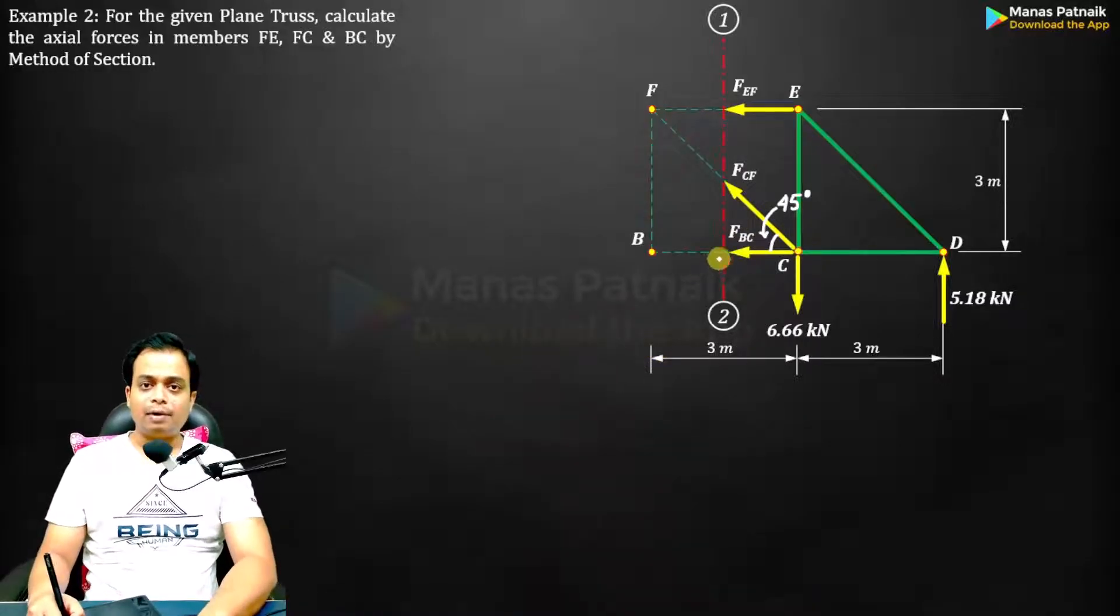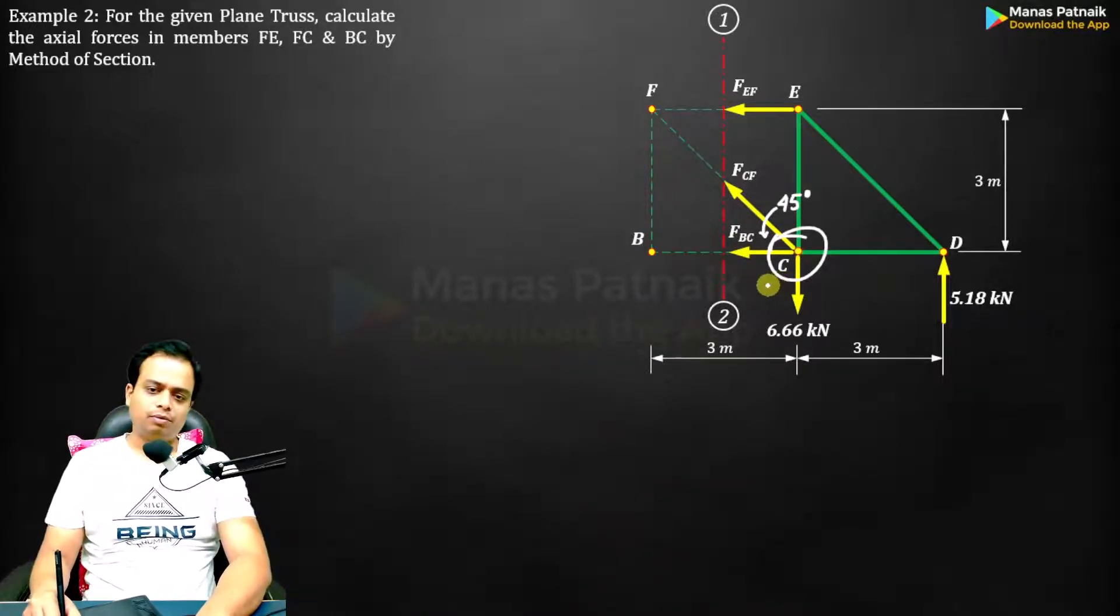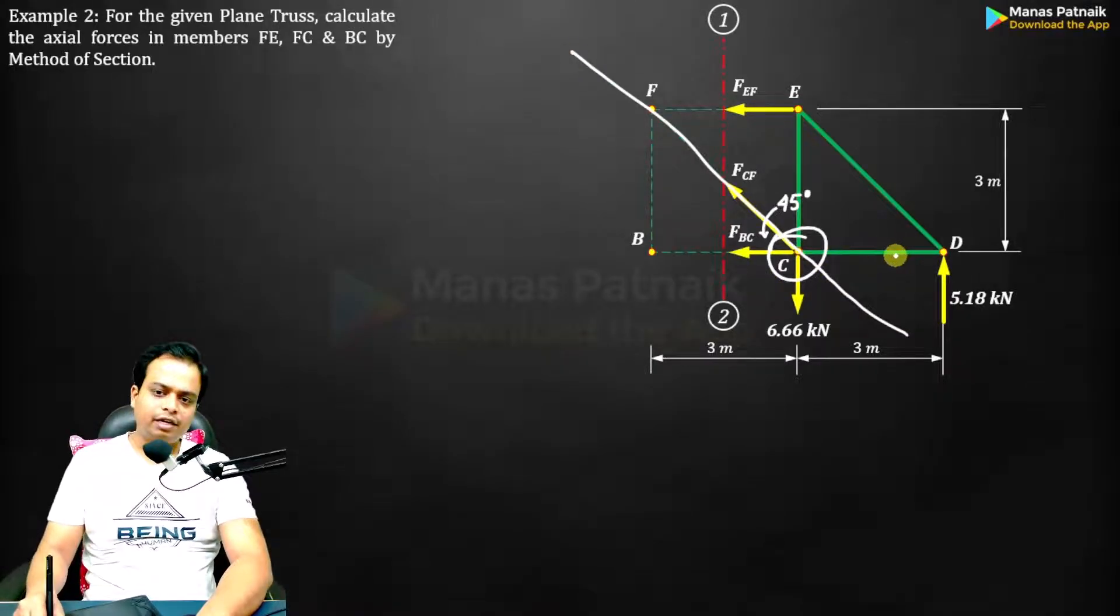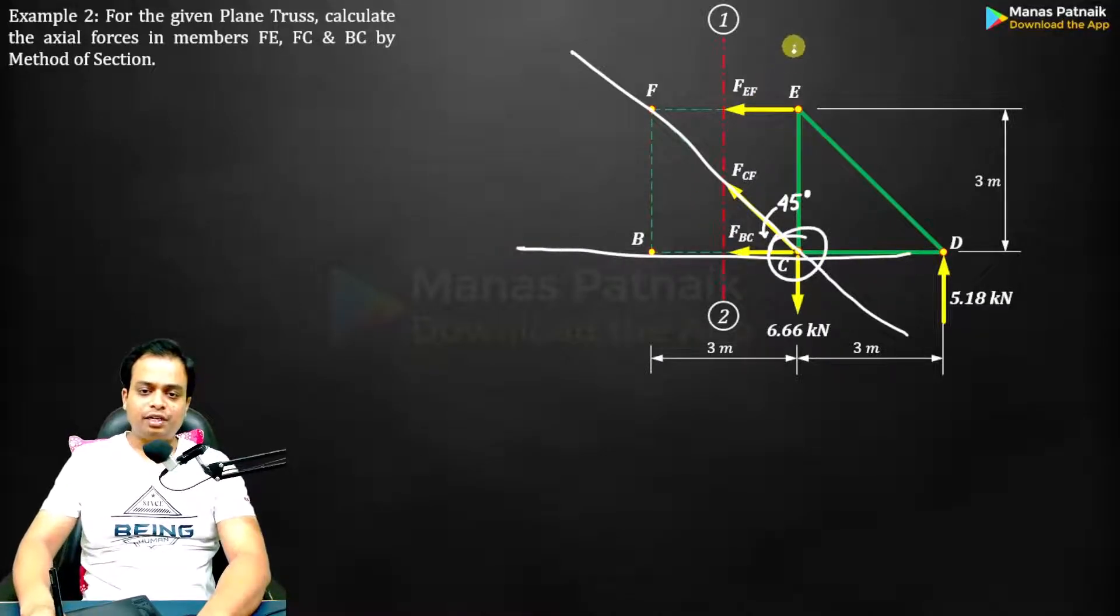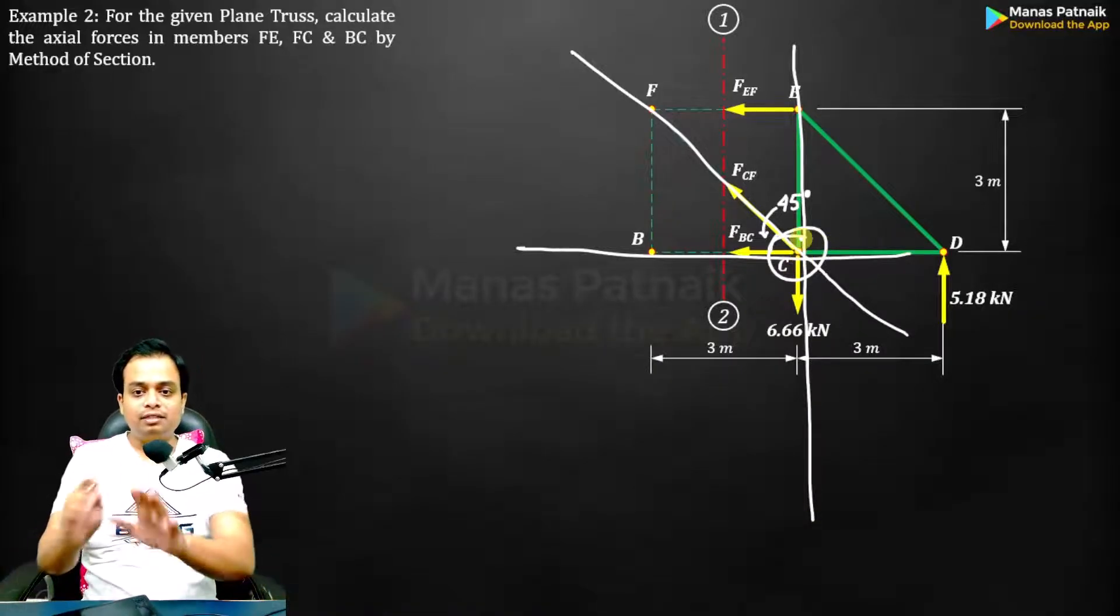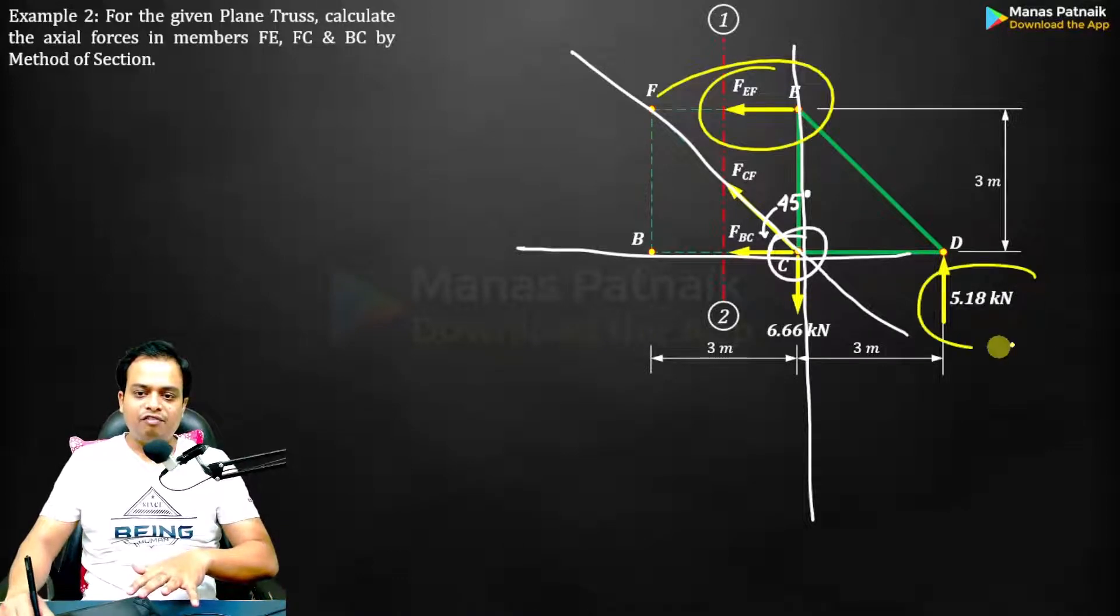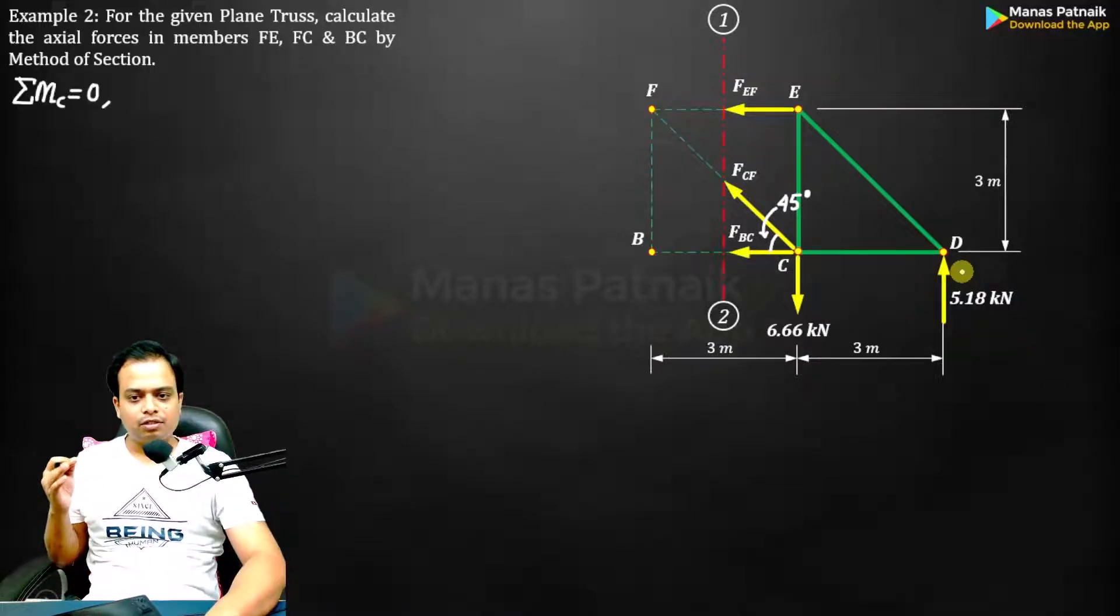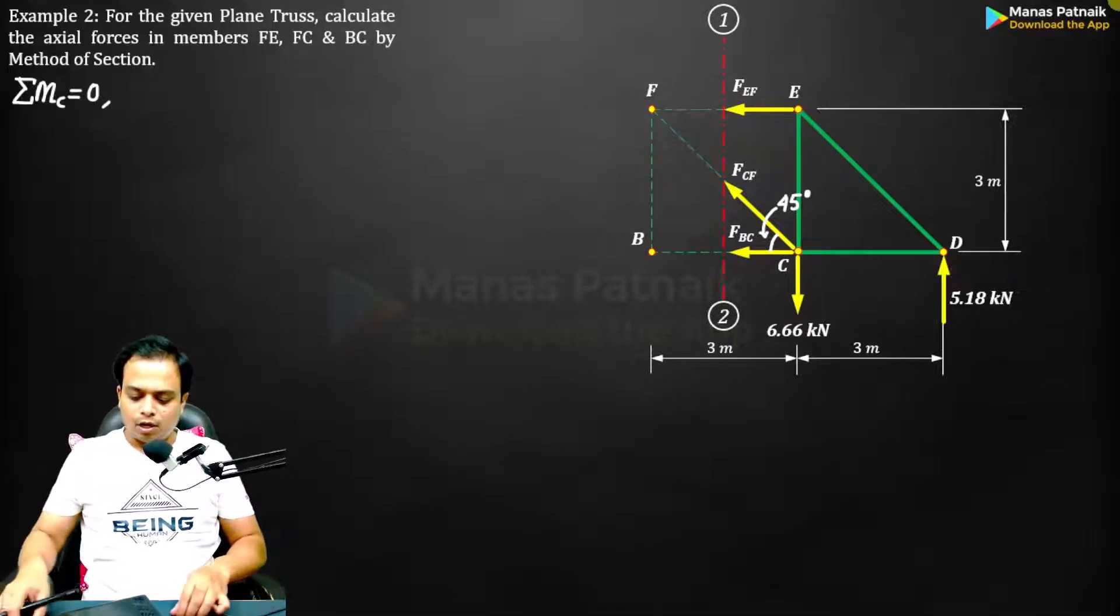Now apply the equilibrium conditions. Start with taking the moment. Let's take the moment about C=0. What is the benefit? FCF passes through it, that is out of the picture. FBC passes through it, this also is out of the picture. Even this 6.66 kilonewton force is also passing through this point C. So these three forces are out of the picture. We are just left with FEF and 5.18. Very nice. Start with moment=0 about C.